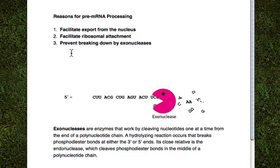So by adding on the 5' cap and the poly-A tail, you prevent the exonuclease from breaking down the mRNA molecule. The exonuclease will still break it down, but just won't do it as quickly.